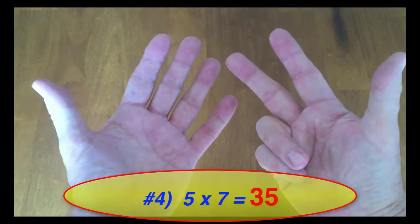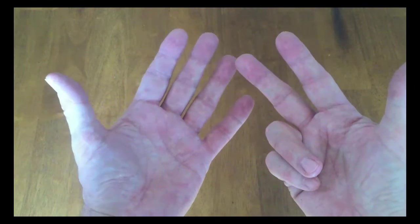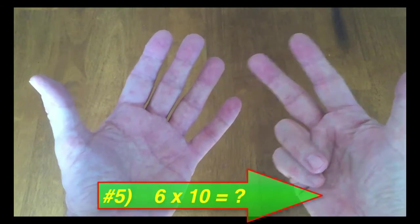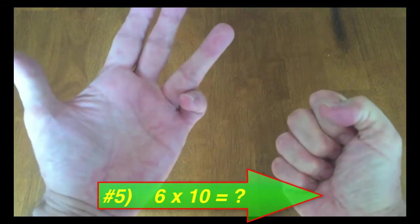So there you have it. 5 times 7 is 35. And let's do one that's kind of trivial, when you multiply by 10. So we're going to do 6 times 10. So we'll represent 6 on our left hand like this. 10 is with all fingers down.